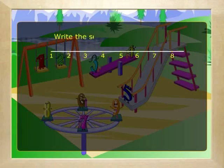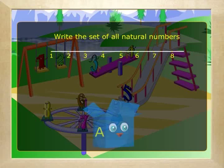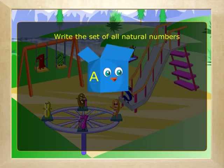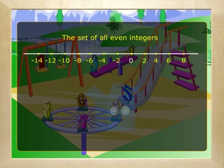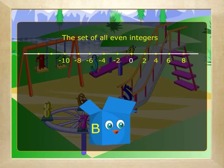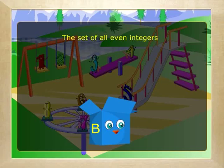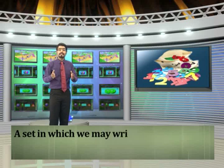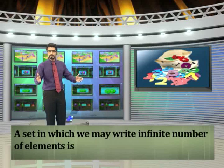Now let us write the set of all natural numbers: A = {1, 2, 3, 4, 5, ...} — it keeps going. What about the set of all even integers? It is {..., −14, −12, −10, −8, −6, −4, −2, 0, 2, 4, 6, ...}. On either side the numbers keep going with no end. Such sets in which we may write an infinite number of elements are called infinite sets.